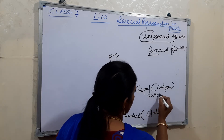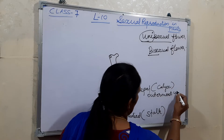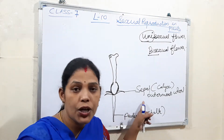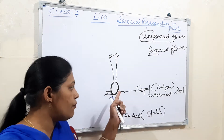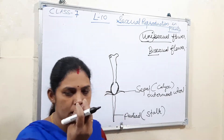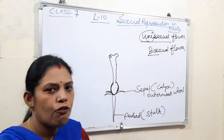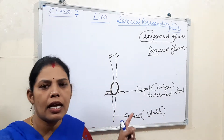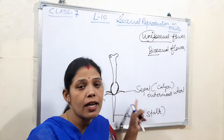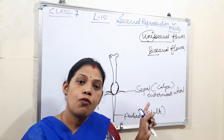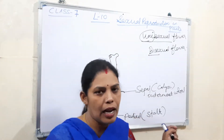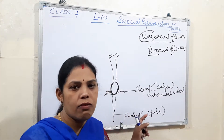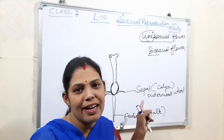The calyx is the outermost part of the flower and is green in color. Its function is to protect the flower when it is in the bud stage — after it blooms it becomes the flower. So in the bud stage the sepal protects. Most plants have green colored sepals which also help for photosynthesis — they trap sunlight. In some rare cases flowers won't have green colored sepals.